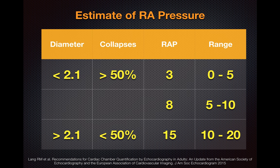From that same set of guidelines, here are the estimates of right atrial pressure. If the diameter of the IVC is less than 2.1 centimeters and it collapses more than 50%, the estimated right atrial pressure is 3 mmHg. If the IVC is greater than 2.1 centimeters and collapses less than 50%, the estimated right atrial pressure is 15 mmHg. Anything in between is 8 mmHg. Right atrial pressures are not discrete numbers — there's typically a nice range, displayed here, but these are reasonable numbers to memorize.